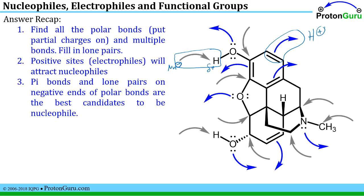To recap how we came to this rather complicated answer: we first find all the polar bonds and put partial charges on those, and find the multiple bonds. We also fill in the lone pairs to identify all of those electrons. Then we identify the positive sites as electrophiles — they will attract nucleophiles and pull electrons towards them as indicated by arrows pointing towards those sites. Finally, the pi bonds and lone pairs on negative ends of polar bonds are the best candidates to be nucleophiles, giving electrons away towards some type of electrophile.